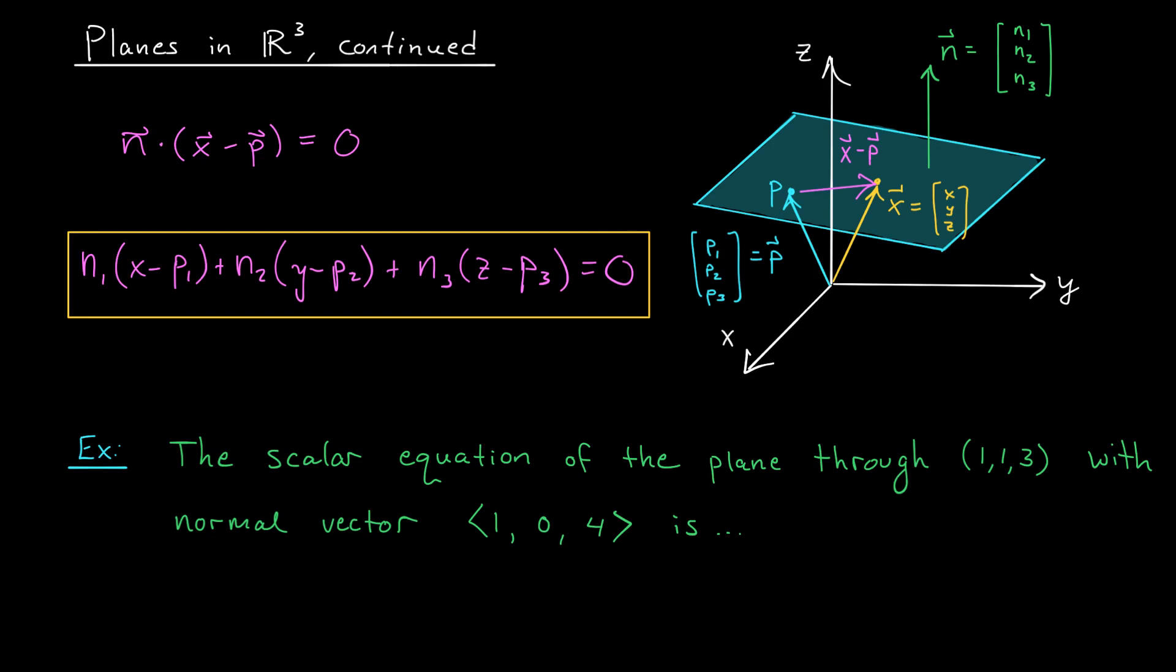For example, suppose you want to know the scalar equation for the plane that passes through the point 113 and has normal vector 104. Well, 113 is going to play the role of P, and 104 is going to play the role of N. So according to our formula, the equation should be 1 times X minus 1 plus 0 times Y minus 1 plus 4 times Z minus 3 is equal to 0. Now, you can simplify this if you like by getting rid of that 0 term in the middle. That'll leave you with X minus 1 plus 4 times Z minus 3 equals 0. And if you like, you can even move the constants to the other side. If you expand out the multiplication, you should be left with X plus 4Z equals 13.